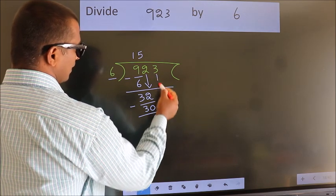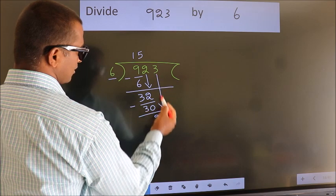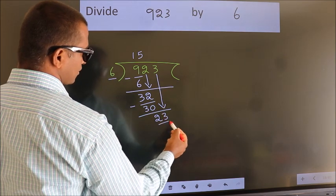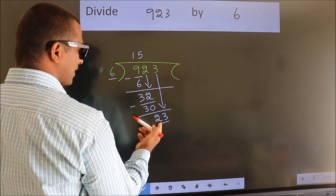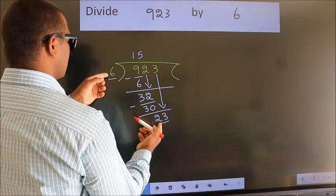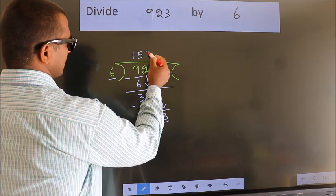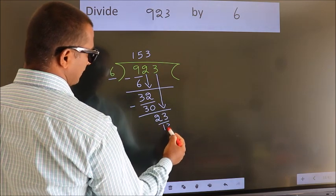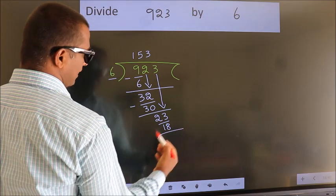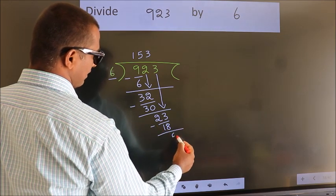After this, bring down the beside number. So, 3 down. So, 23. A number close to 23 in the 6 table is 6 times 3 is 18. Now we subtract. We get 5.